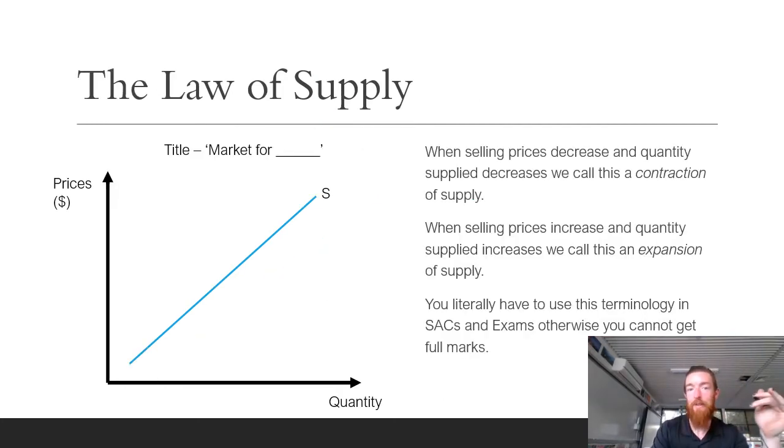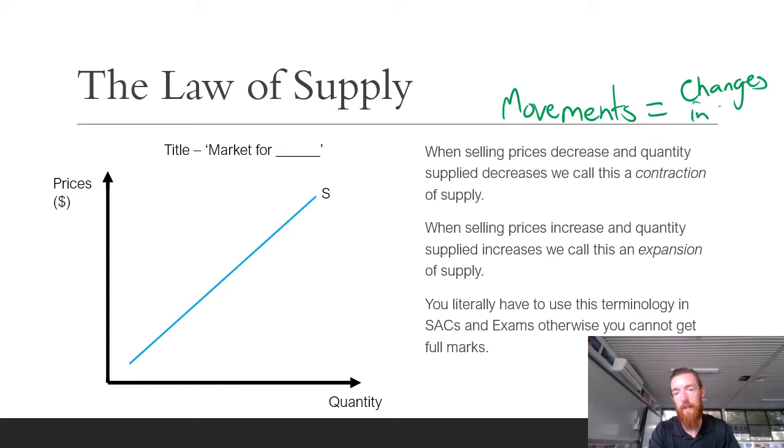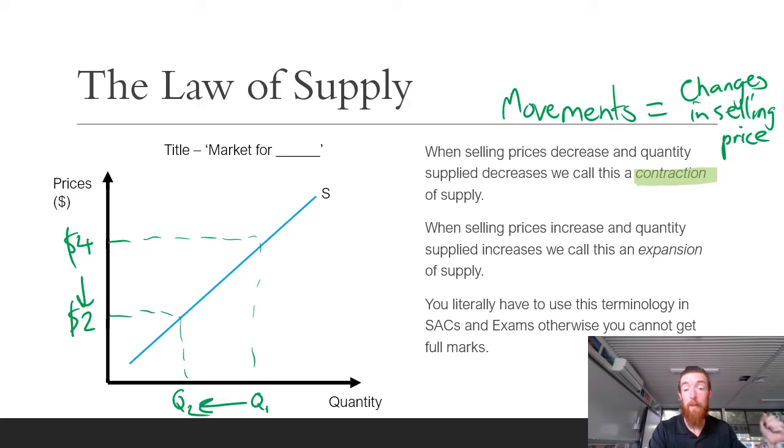So how we use this supply curve? First we're going to talk about movements in supply. So when we talk about movements in supply it's all about changes in selling price. So movements equals changes in selling price. So the cost of making it hasn't changed it's just how much it sells for has changed. So when the selling price decreases, so let's just say it goes from four dollars to two dollars because they're the numbers that I always use, suddenly businesses want to supply less overall as we move from Q1 to Q2.